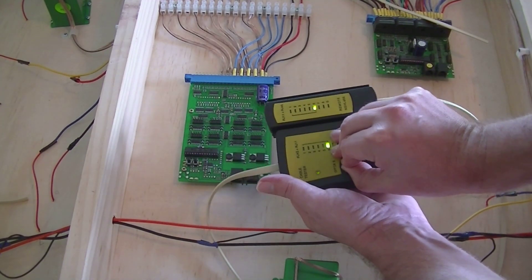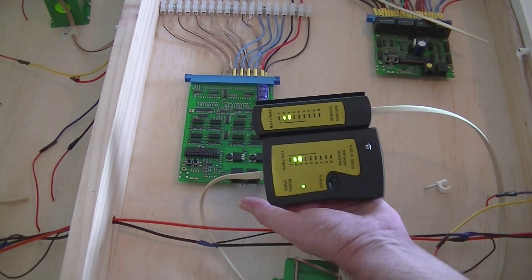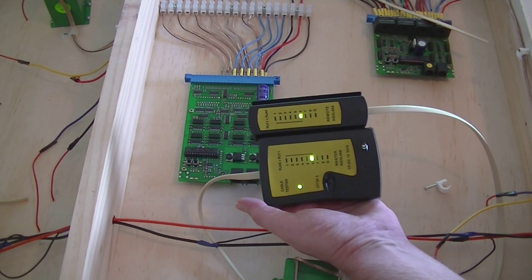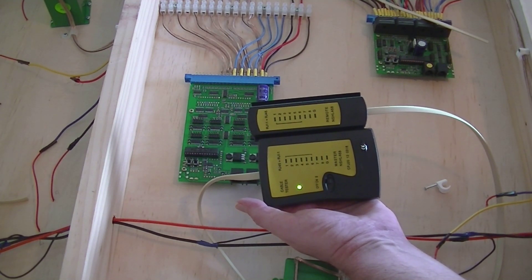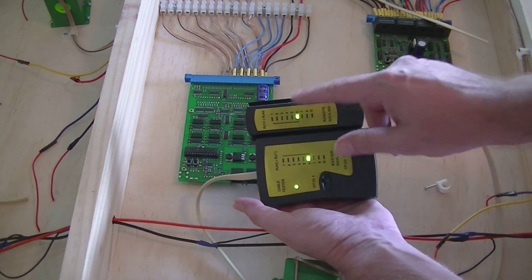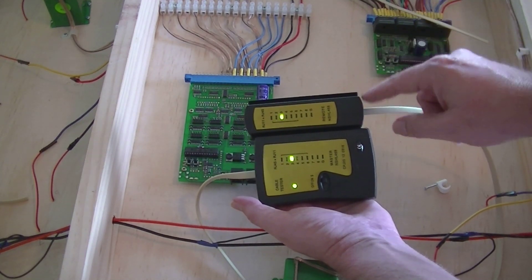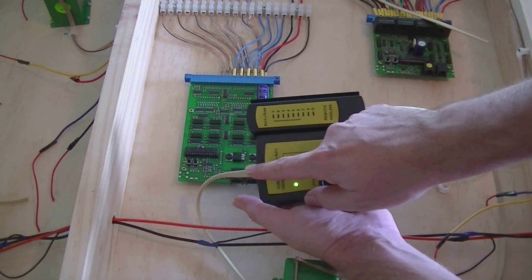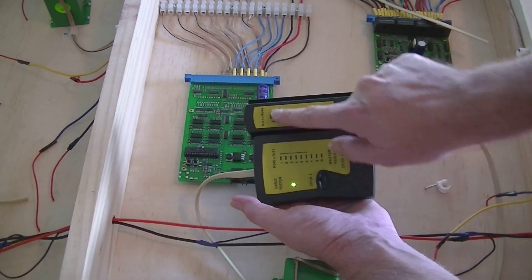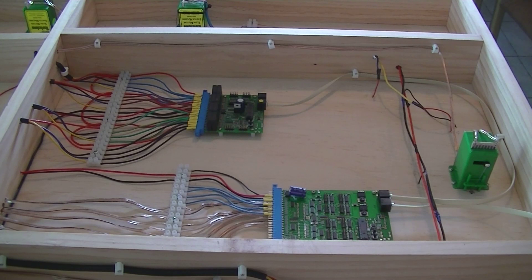If I switch it on... there it is showing me that all six connections are working correctly. When you use the Digitrax one it tests the cable, but if you had a bad plug you don't know which side is actually bad. So this one will actually tell you which plug is bad.